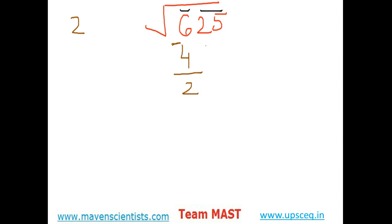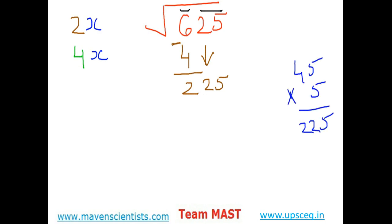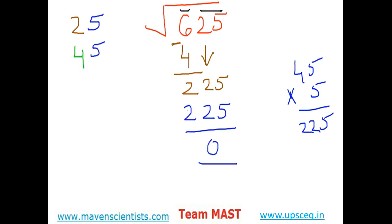That gives 2. Bring the second pair down, so the number now is 225. Next step: double the previous guessed number, which was two. So two times two is four. Now the last step is guess the number x which when multiplied with the number 4x gives the output less than or equal to 225. If x is five, then 45 times 5 gives exactly 225. The remainder is zero, so 25 is the perfect square root of 625.